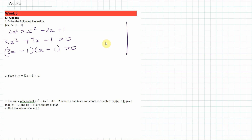If we think about the graph, we've got a root at one third and at minus 1. It looks roughly like a upward parabola, and we want where it's greater than 0, so we're looking at the outer parts. So x is less than negative 1 or x is greater than one third.